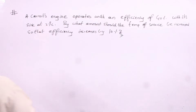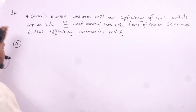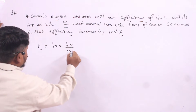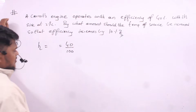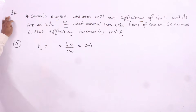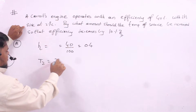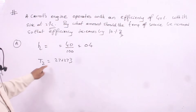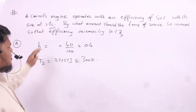Let us see this problem. A Carnot engine operates with an efficiency of 40%, so efficiency is 40 divided by 100, which is 0.4. The temperature of the sink, T2, is 27 plus 273 — you should be very careful, it is given in Celsius, so we convert it to Kelvin, which gives 300 Kelvin.